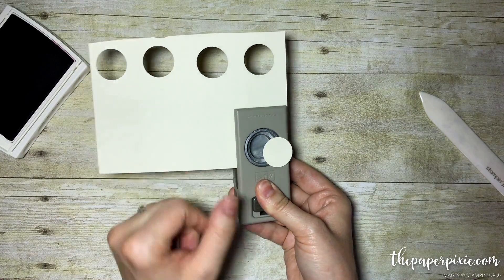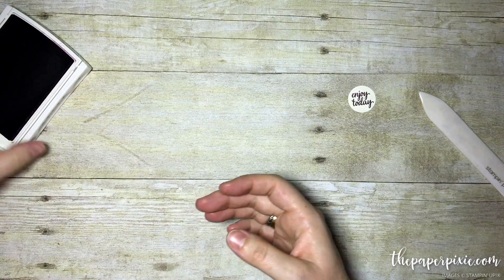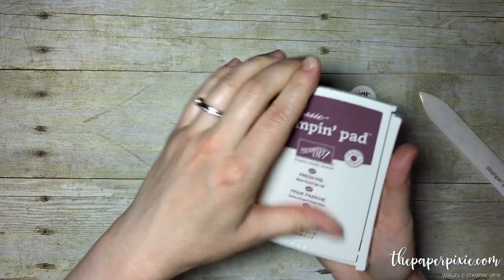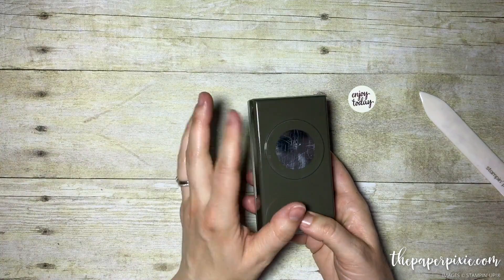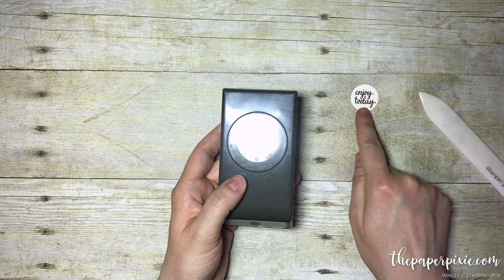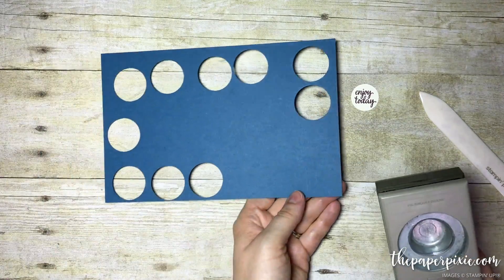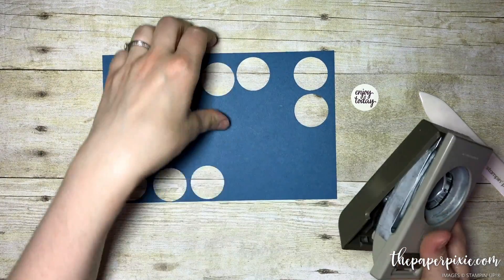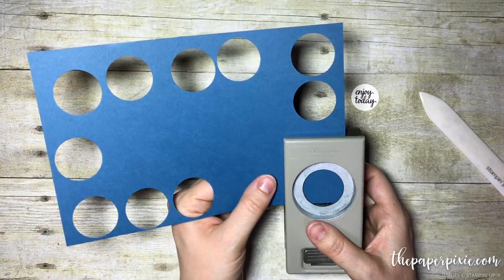I love turning our punches upside down so you can see exactly where you're punching. I'm going to close this ink pad so I don't get ink all over. Now using the 1.25 inch circle, which is slightly larger than the 1 inch, I'm going to punch a circle out of Dapper Denim, which is one of the 2016 to 2018 in-colors.